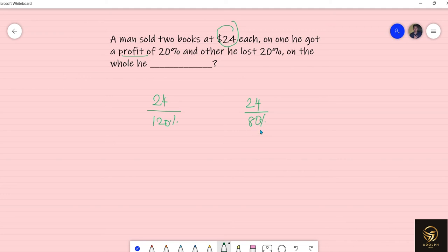If you solve it you will be getting the cost prices. $24 divided by 120 percentage is nothing but 1.2, and 80 percentage will be 0.8. Now you can simplify it - maybe if you have calculator and calculator is allowed in the exam you can solve it directly.